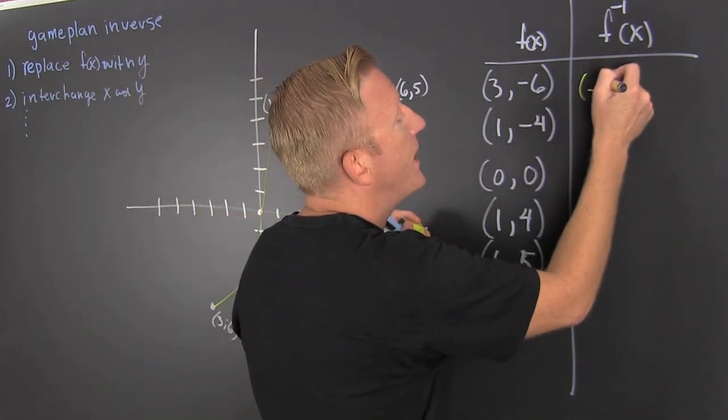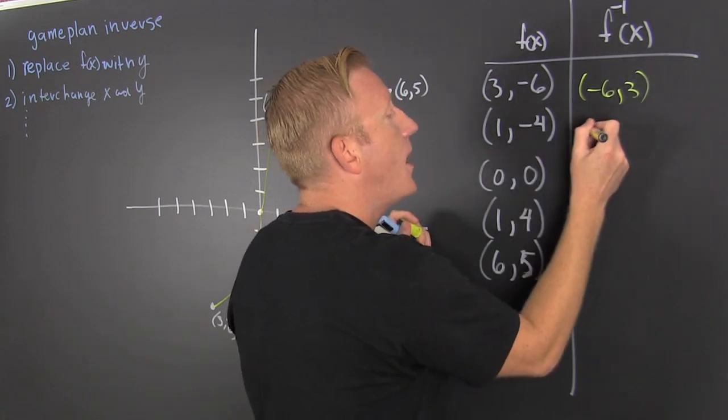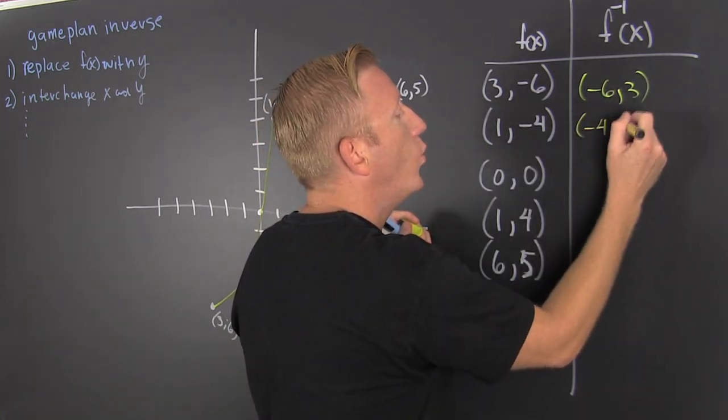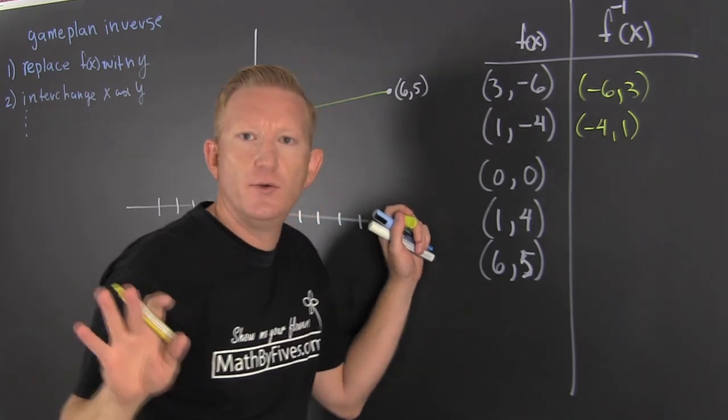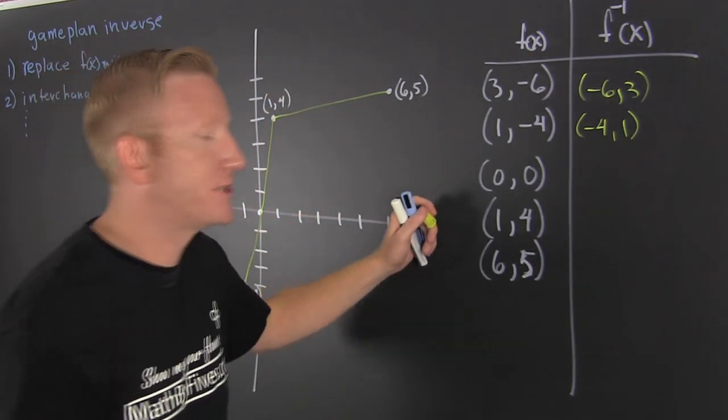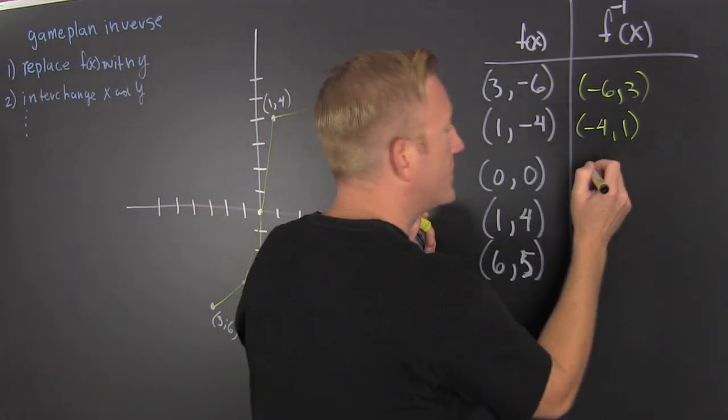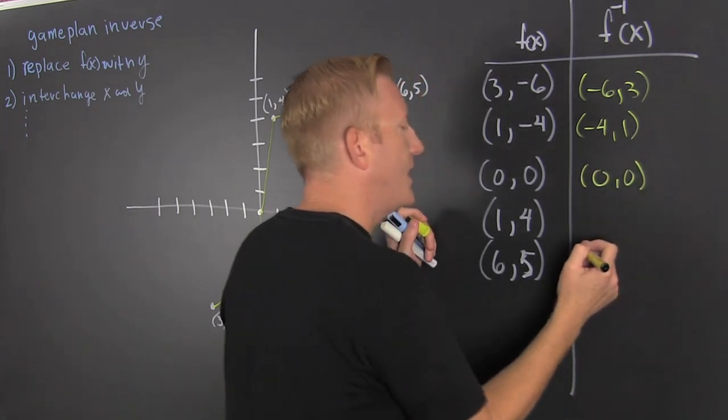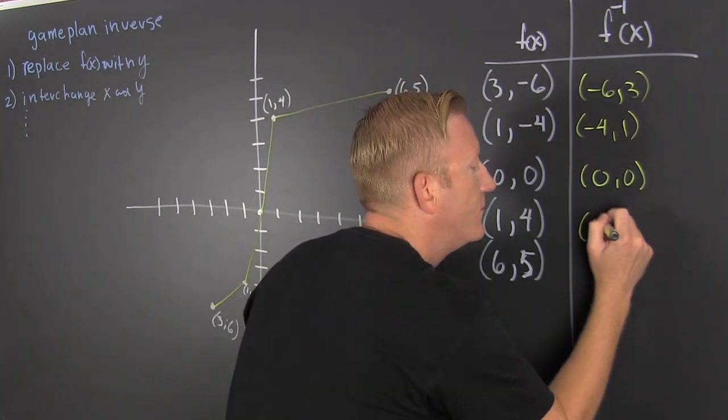This is (-6, 3) and then (-4, 1). We're looking and we're focusing on the reflection - more on that in a moment. I interchange (0, 0) with (0, 0), same point, and then (4, 1) and then (5, 6).